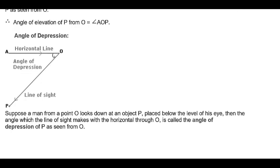The angle of depression: the horizontal line is given, and below it is the angle of depression. Suppose a man from point O looks down at an object. In the angle of elevation we look up, but in the angle of depression a man is looking down at an object placed below the level of his eye. His line of sight is below the horizontal. The angle which the line of sight makes with the horizontal through O is called the angle of depression of P as seen from O.